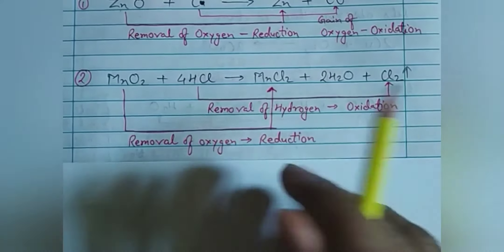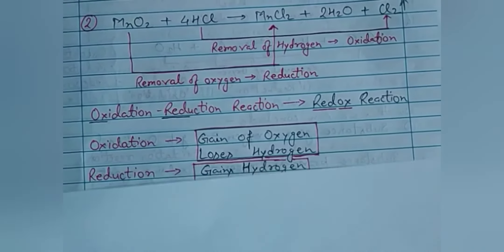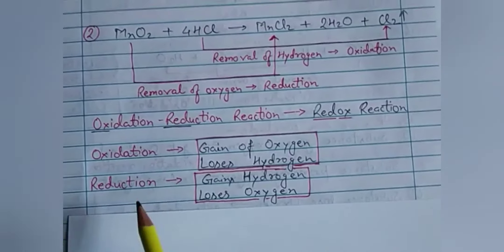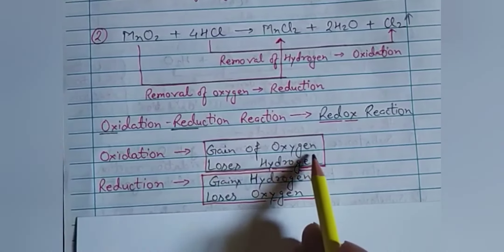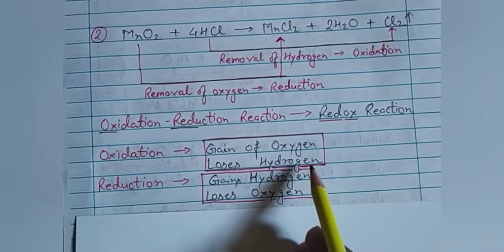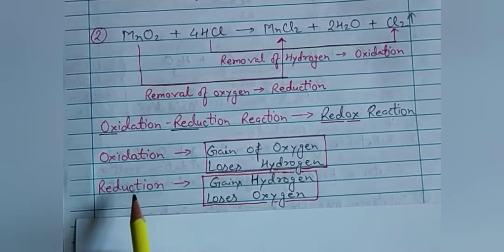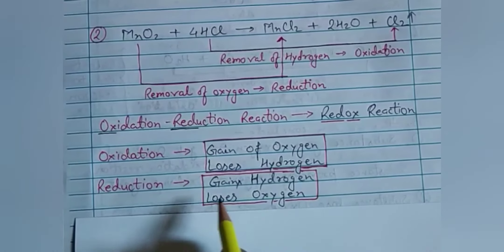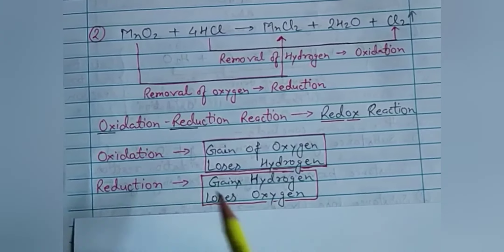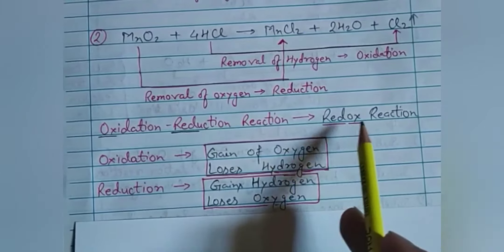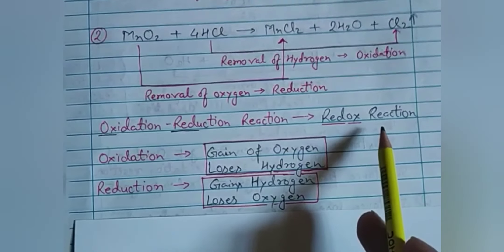To summarize: oxidation is the gain of oxygen or the loss of hydrogen. Reduction is the gain of hydrogen or the loss of oxygen. A reaction involving both is called a redox reaction.